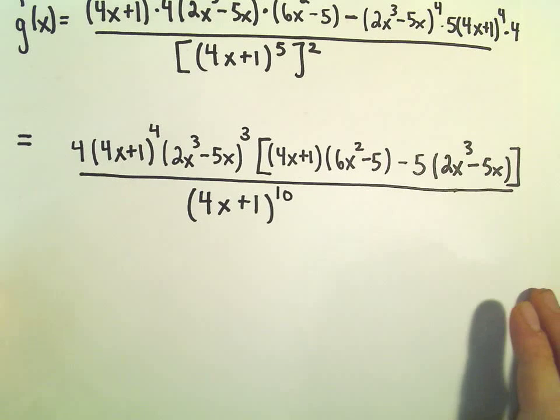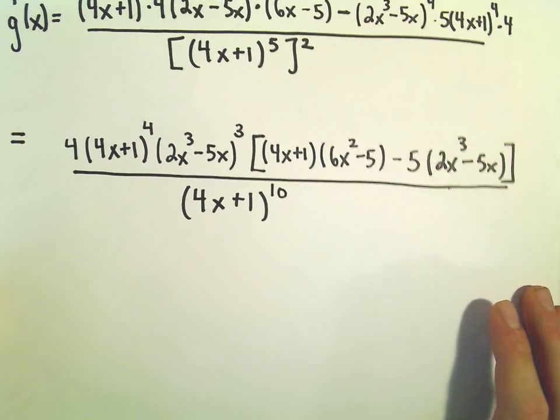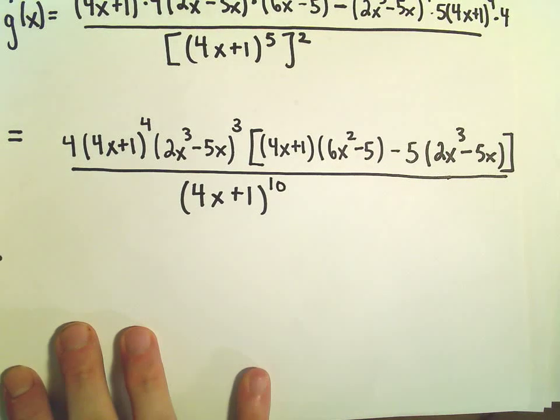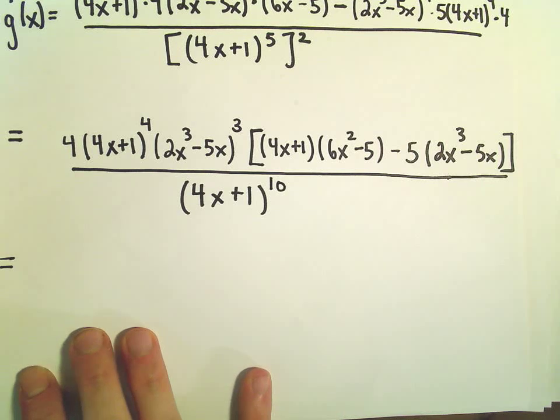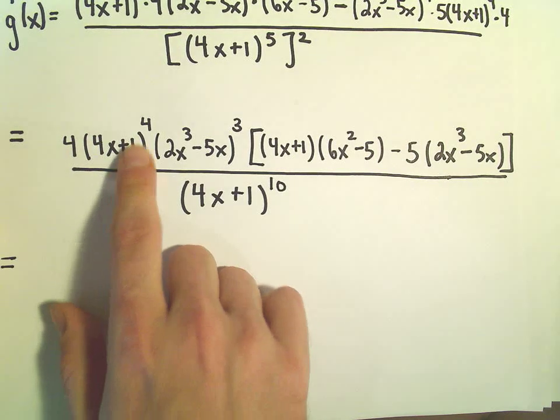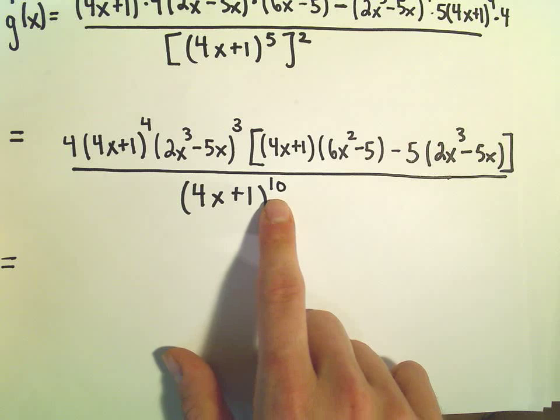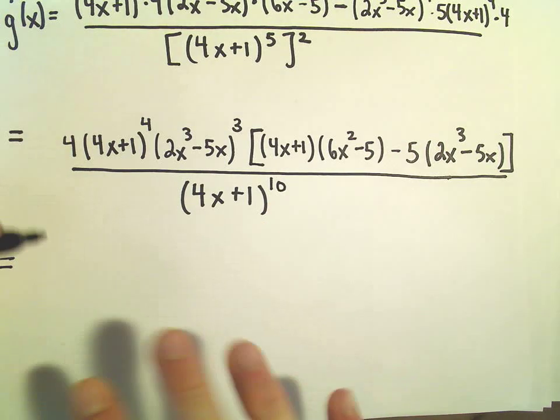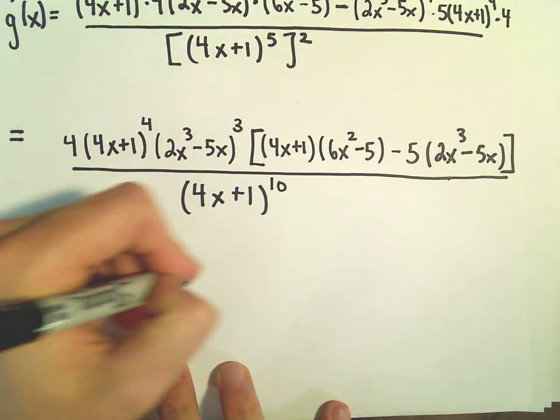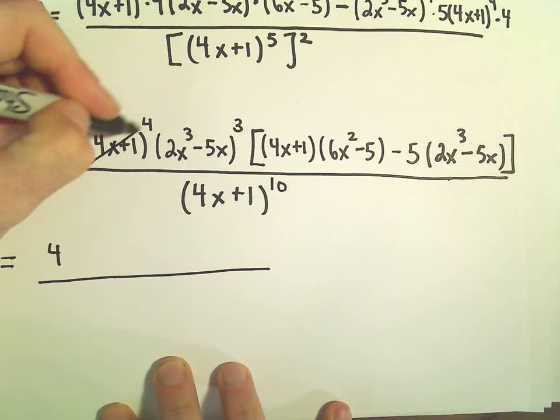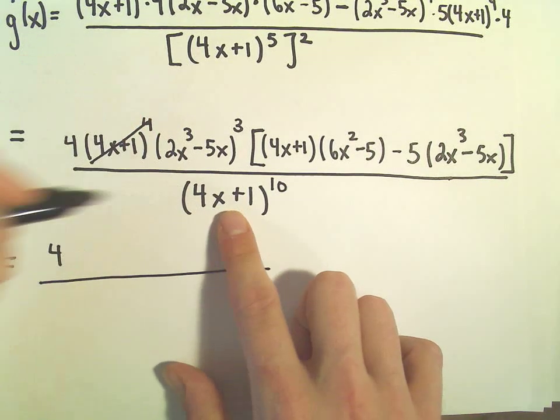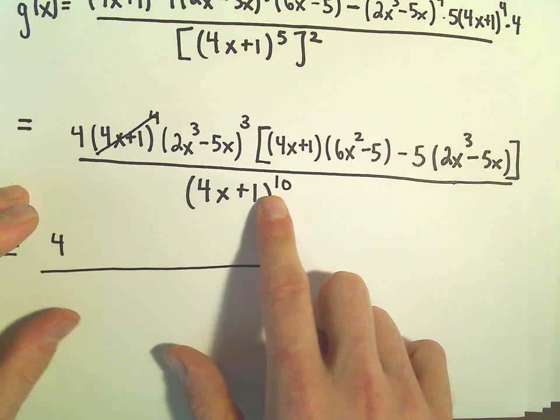At this point, we can clean it up a little bit more. Notice we have a 4x plus 1 to the 4th and a 4x plus 1 to the 10th. We can actually cancel out the 4x plus 1 to the 4th with 4 of the 4x plus 1s in the bottom.